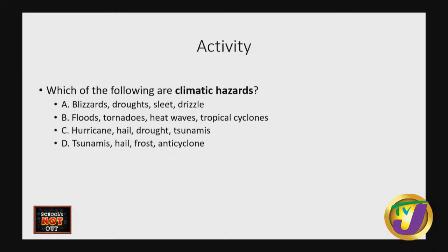Here's an activity: which of the following are climatic hazards? A - blizzards, drought, sleet, drizzle; B - floods, tornadoes, heat waves, tropical cyclones; C - hurricane, hail, drought, tsunamis; or D - tsunami, hail, frost, anticyclone. We can rule out C and D because they both include tsunamis, which are not climatic. Option A is close, but a drizzle isn't a hazard. The correct answer is B - floods, tornadoes, heat waves, and tropical cyclones.